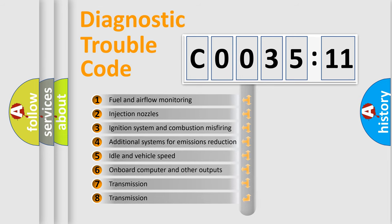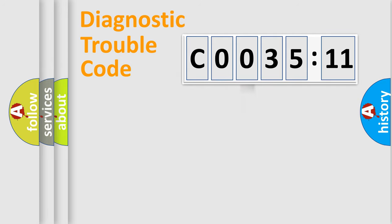The third character specifies a subset of errors. The distribution shown is valid only for the standardized DTC code. Only the last two characters define the specific fault of the group.